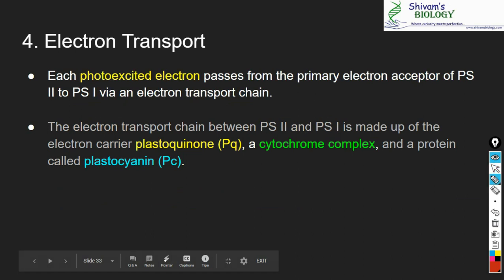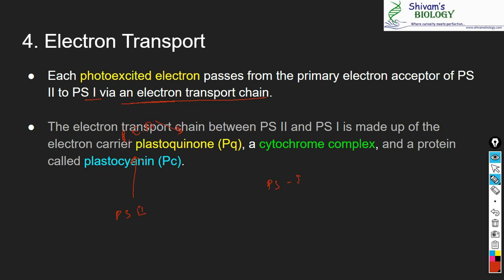In step 4, the electron transport chain: each photo-excited electron passes from the primary electron acceptor of PS2 toward PS1 through an electron transport chain made up of plastoquinone, a cytochrome complex, and a protein called plastocyanin. These molecules act as carriers — they receive the electron and transfer it forward.